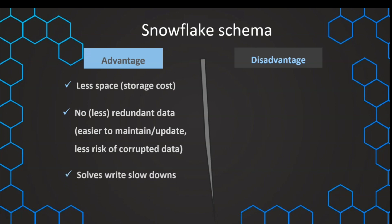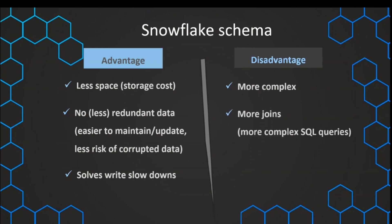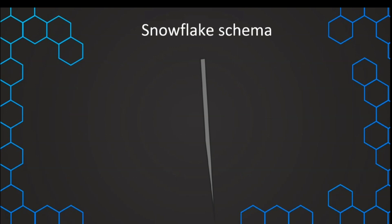However, since in a data warehouse we usually want to get data out, easier maintenance is not such a big advantage. The snowflake schema can solve some write slowdowns, and if we need to frequently update data it addresses those challenges. But on the other side, it is much more complex — since the data is more normalized, we have more tables and it becomes more complex to understand where all data is available. We need more joins to connect the tables, which can again be more complicated. Due to these joins, performance is usually lower because more compute power is needed, which results in lower performance in our data marts and lower usability.